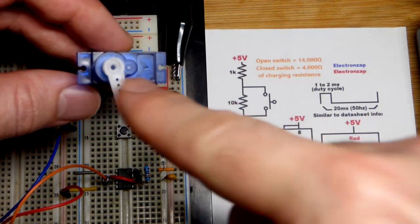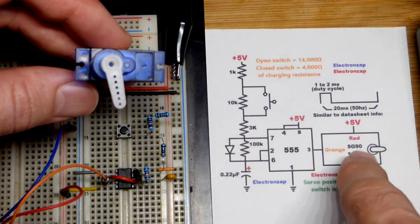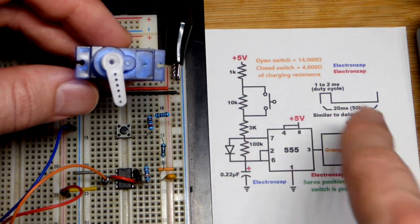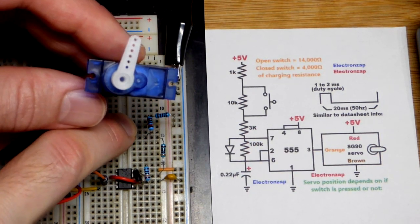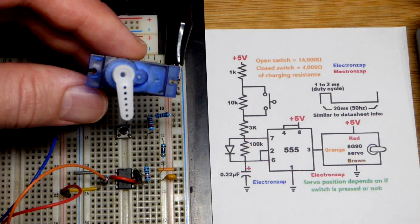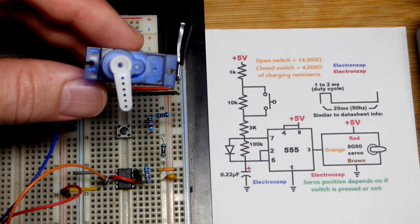So now in this video, we're going to look at having a servo where we have two positions. Right now, the switch is not being pressed. We're in one position, and when we press the switch, it goes into the other position. We let go, it goes back to the original position.